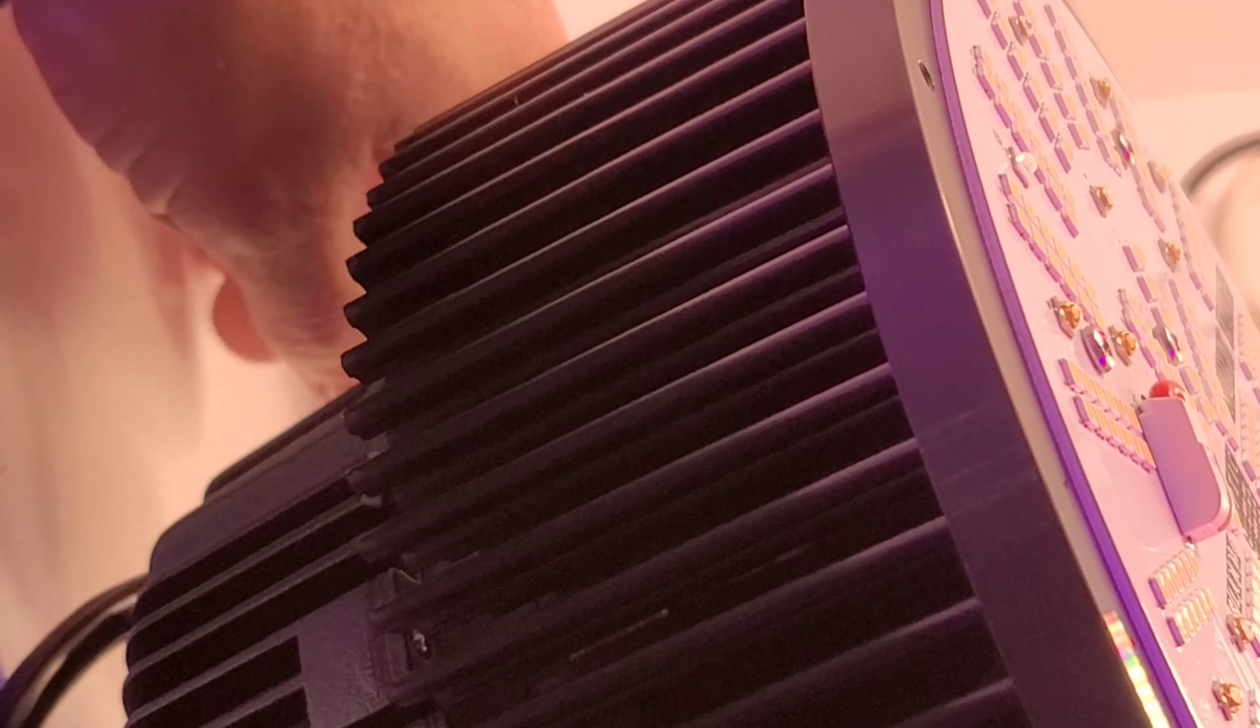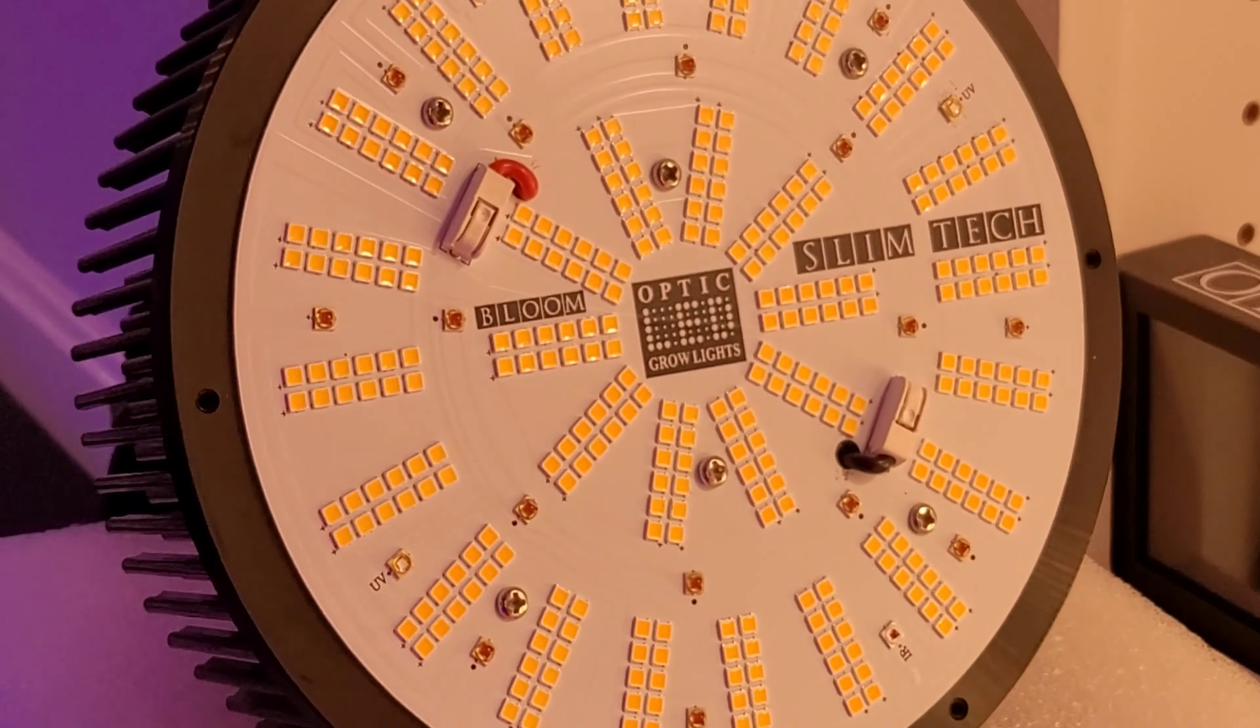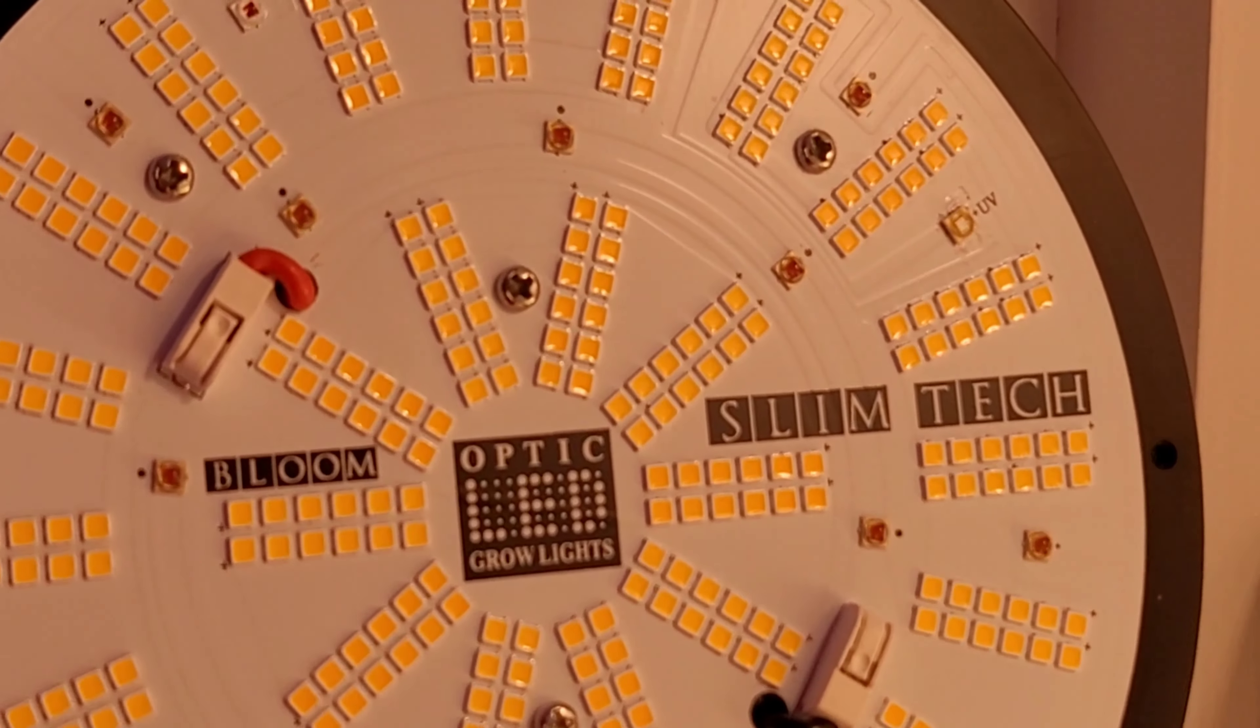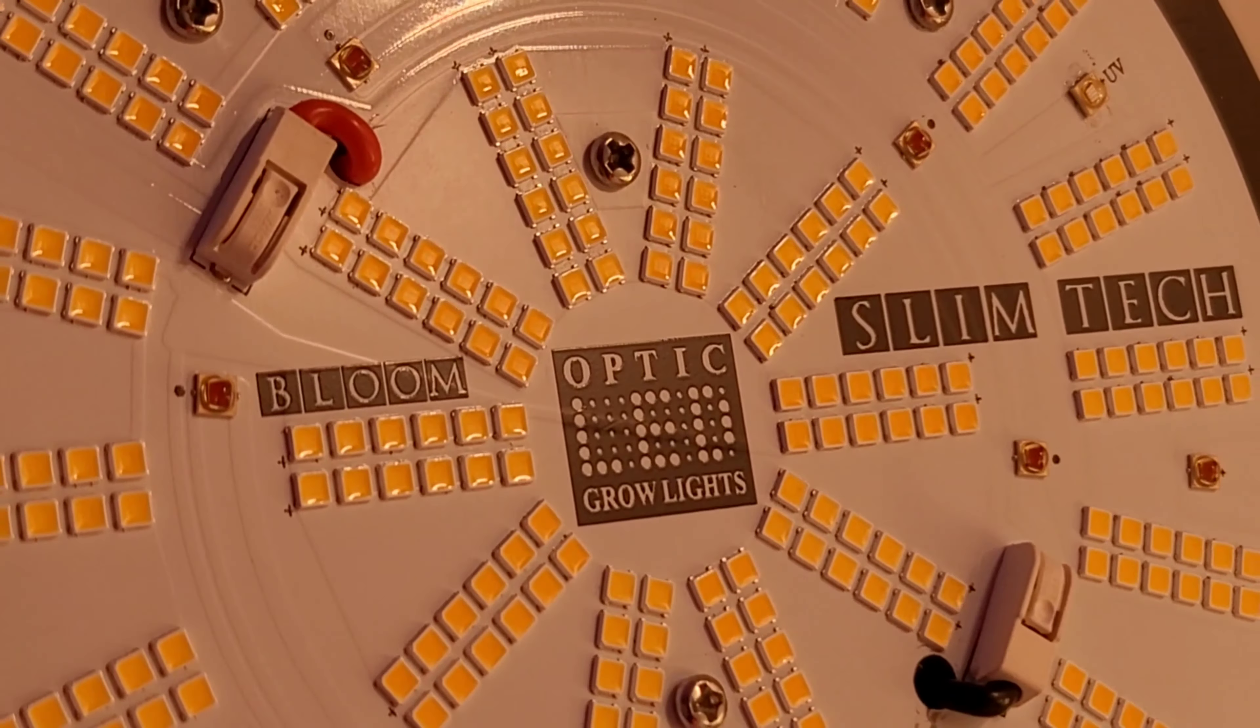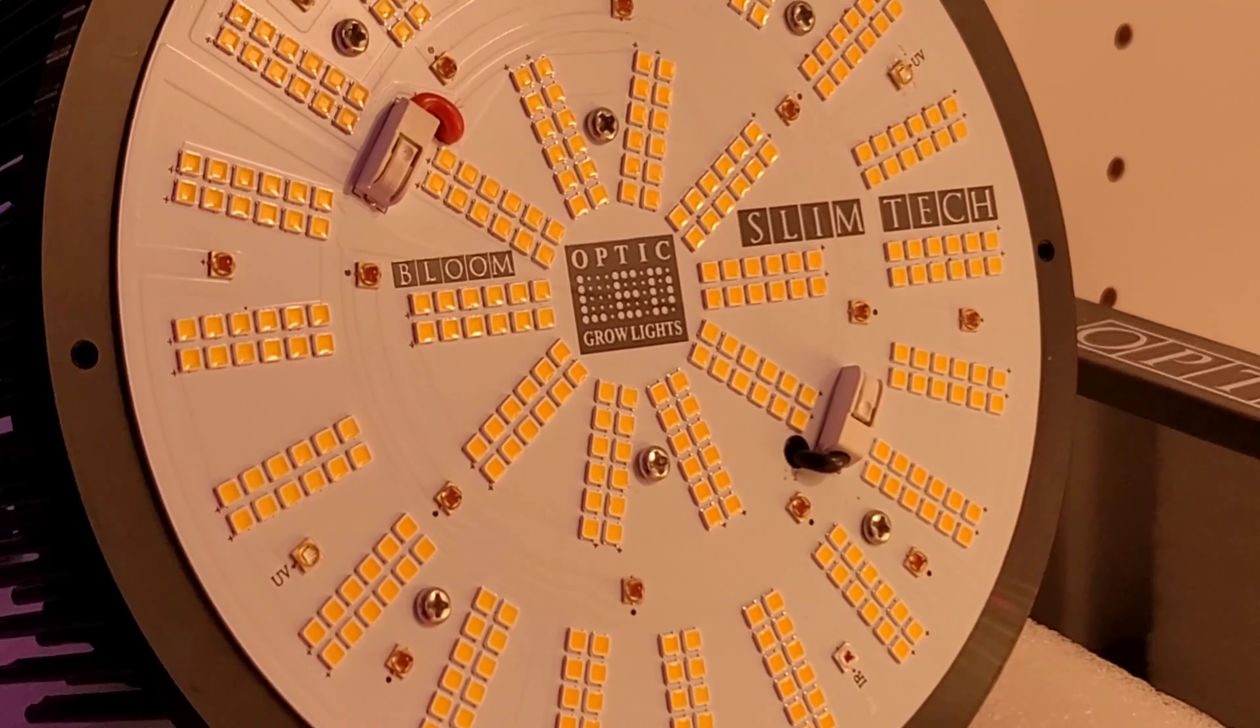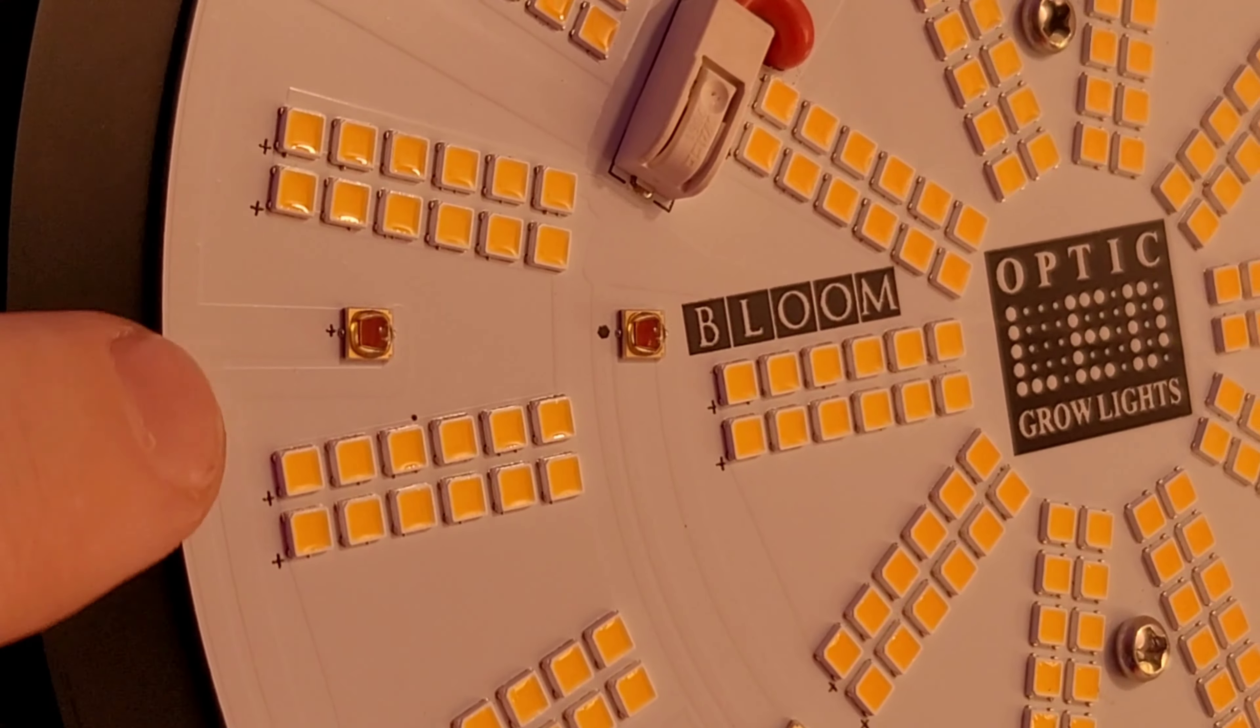The driver on the top, power cord hooks up right there. You got your dimmer. I'll grab it. It's over here on the back side. We got the dimmer right there.